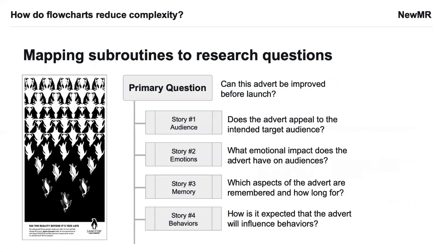Let's look at that in practice. Returning to our previous example of the primary research question looking at advert effectiveness, the primary research question was: can this advert be improved before its launch? What we now have is a very simple overview of our survey structure in a series of four subroutines. In story one, we might ask a series of questions about the audience. Story two, a set of questions about emotions. Story three, questions about memory. Each of those subroutines has within it a block of questions and actions. In essence, what we are doing is breaking our survey into a series of sections or blocks, and each of those blocks has within it a series of questions and logic applied to them.